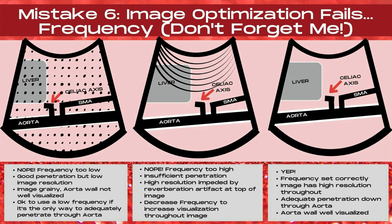Continuing along with mistake number six, image optimization fails when imaging the aorta — now let's talk about frequency. Don't forget it, because frequency is one of the most underutilized controls on an ultrasound machine simply because it's forgotten. In the first image, the frequency is too low: there's great penetration all the way through the aorta, but low image resolution. It's an easy-to-image patient, so a higher frequency could provide great resolution. The image is grainy and the aorta wall is not well visualized.